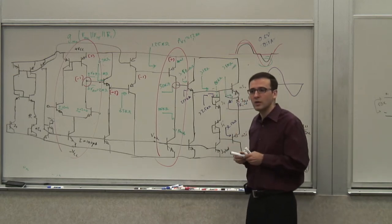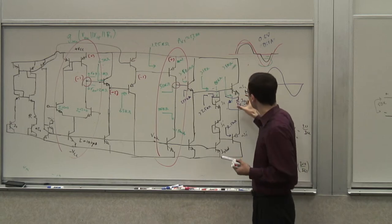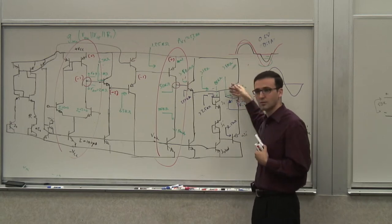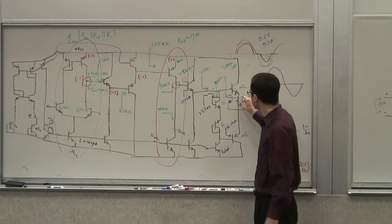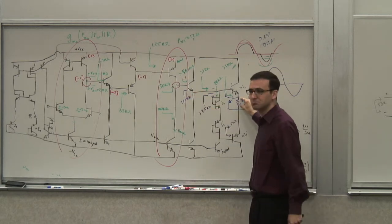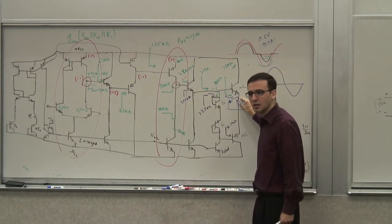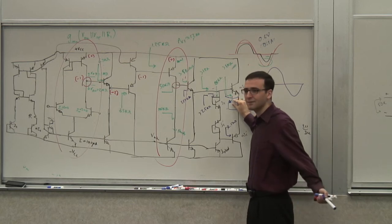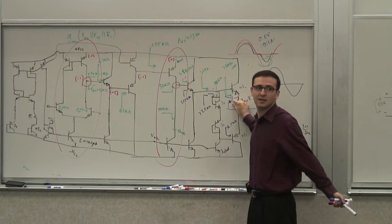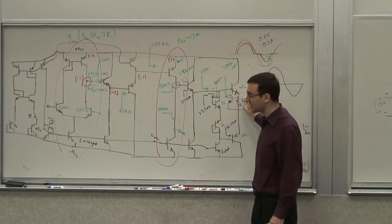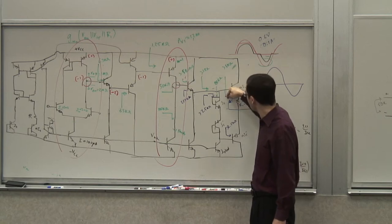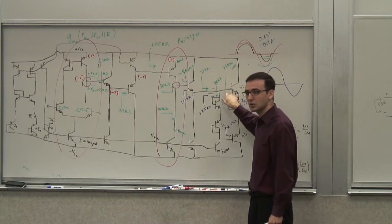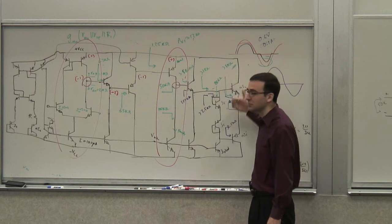If I hook it up here, what happens is that normally, if this current is not close to 100 milliamps, this voltage drop is nothing — it's nominal. So this transistor is off, nothing happens. Once the current level reaches a large value, it starts pulling the current and therefore it doesn't let more base current go in. It limits how much current can be drawn.